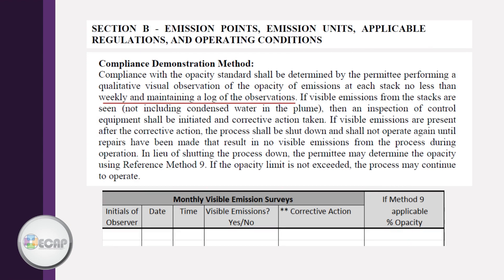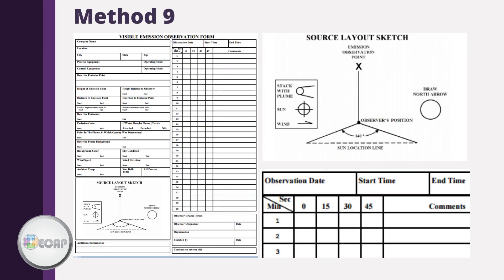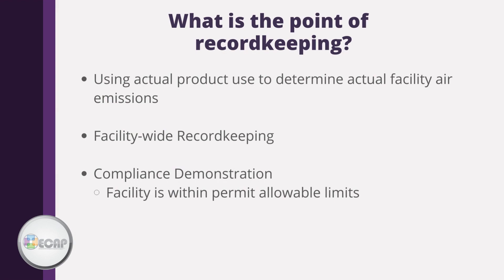Here we see an example of a qualitative compliance demonstration method for opacity. In plain speak, this language says that the facility shall perform visual observations and record those observations in a log. EPA Reference Method 9, found in 40 CFR Part 60 Appendix A, has been adopted throughout the country as a visible emissions inspection method to standardize the training and certification of observers and ensure reliable and repeatable opacity observations. Here we can see some of the forms used to record observations made through Method 9. If you do not record it, you did not do it.